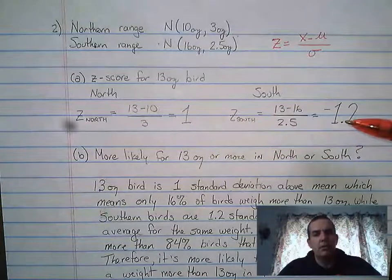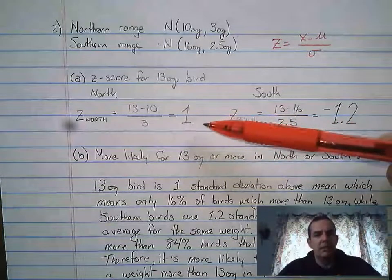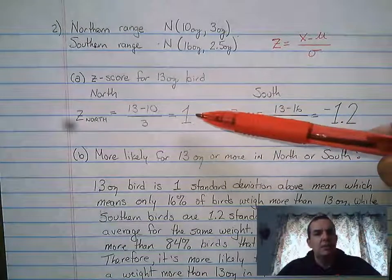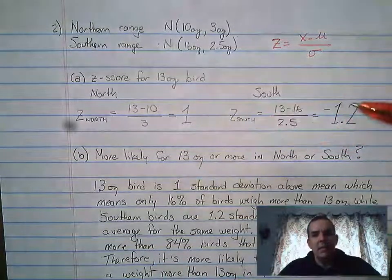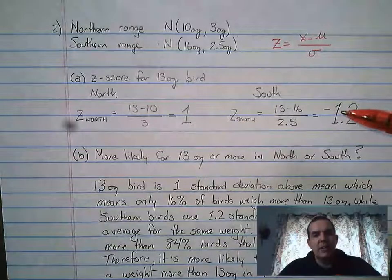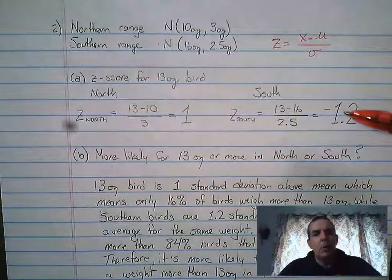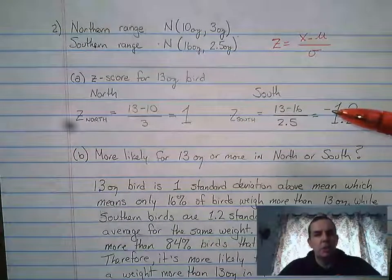This should be enough to earn the full points on this one. If you want to understand the details behind it, this means that a 13-ounce bird would be one standard deviation above the mean in the north, while in the south, the same weighted bird would be 1.2 standard deviations below the mean.